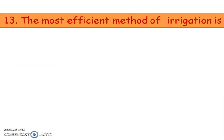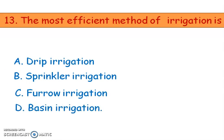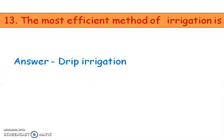Next question: the most efficient method of irrigation is — options are drip irrigation, sprinkler irrigation, surface irrigation, and basin irrigation. The right answer is option A, drip irrigation. In drip irrigation, water is delivered directly to the roots of plants, so water is not wasted. This is the most efficient method of irrigation.